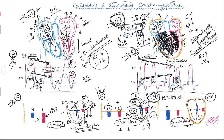Looking at the lateral mitral annulus and the medial mitral annulus, everything is flipped. The lateral mitral annulus has reduced movement — in constrictive pericarditis, the lateral mitral annulus does not move much. But the medial mitral annulus is displaced more.